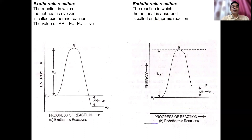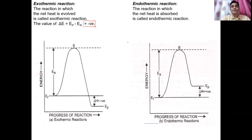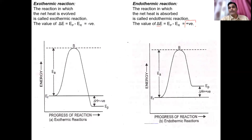The delta E or delta H value is negative during the exothermic reaction, meaning heat is evolved. For endothermic reactions, the value of delta E or delta H is positive, meaning net heat is absorbed.